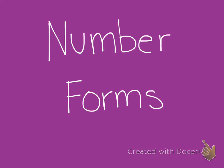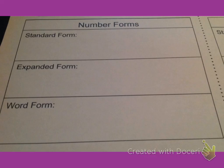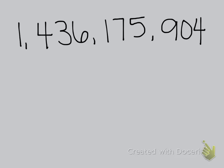Once you know how to read large numbers, you're ready to learn about the different number forms. There are three different number forms. The first one we're going to talk about is standard form. Standard form is a way to write numbers using digits, and standard just means normal or regular. So here we have the number 1,436,175,904. This number is written in standard form — written with just the digits, the normal regular way you would write a number.